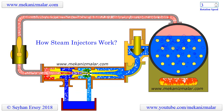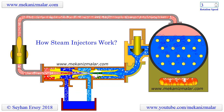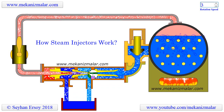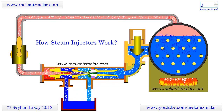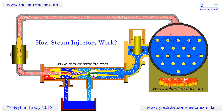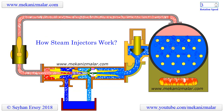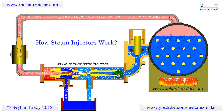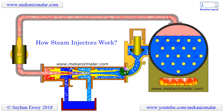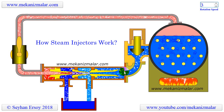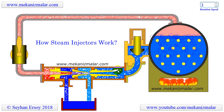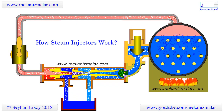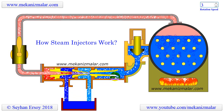The water jet leaving the combining cone is pushed into the delivery cone. It is called the delivery cone because it leads the flow toward the boiler. Before water reaches the boiler, the flow velocity is reduced due to the diverging shape of the delivery cone. Reduced water speed increases the water pressure above the boiler pressure, which allows the feed water to be delivered to the boiler. This flow is shown here in sky blue.